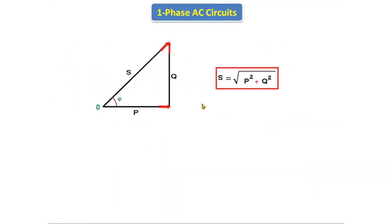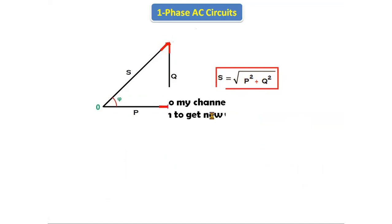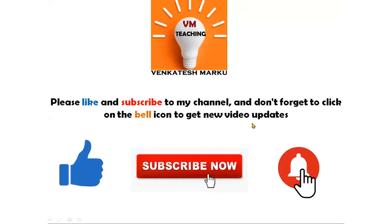Applying the Pythagorean theorem to the power triangle: S² = P² + Q², so S = √(P² + Q²). This is the formula for the power triangle. This completes the behavior of AC through the RL series circuit. In the next class we will discuss the RC series circuit.